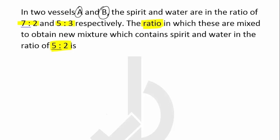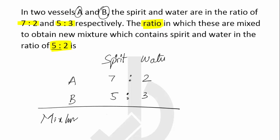Here in this we have to use a cross allegation method. Vessel A contains spirit and water in the ratio of 7:2 parts, whereas vessel B contains 5:3 parts. In what ratio these two have to be mixed so as to form a mixture which contains 5:2?